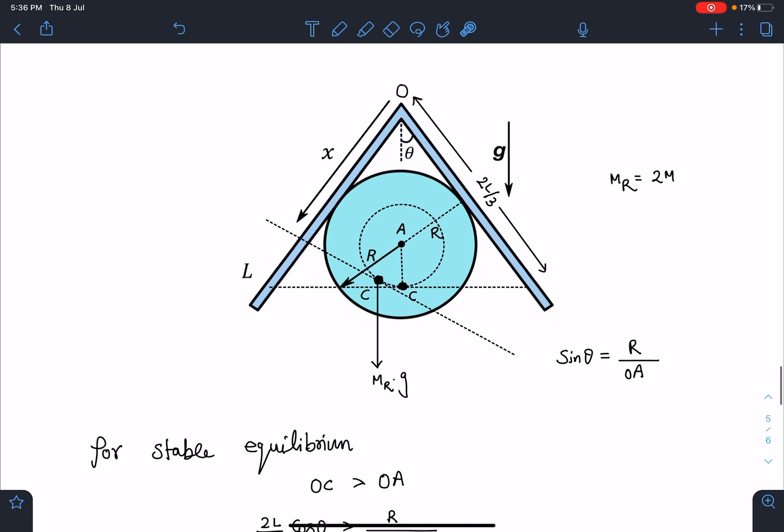If I take combined center of mass of these two rods slightly below this and if I try to rotate this system of rods about this cylinder, you will see about this point A. This is going to rotate like this, this is going to rotate like this. And here torque of m_R into g where m_R is 2m actually, so it will bring it back to this side.